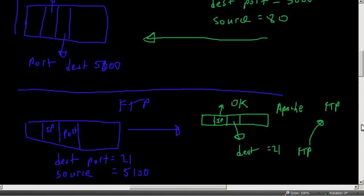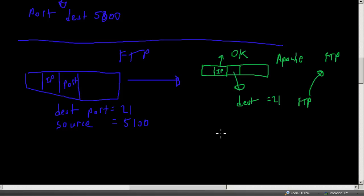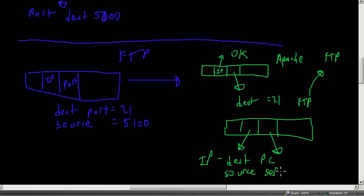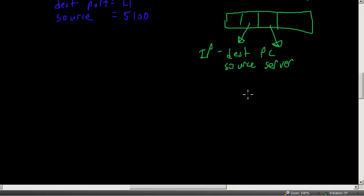The FTP server program processes the packet, then sends it back down to the TCP/IP socket and the network portion of the OS to create a reply. As you'd expect, it has an IP address portion and a port number. The destination IP is our PC, source is the server IP, destination port is 5100, and source port is 21.